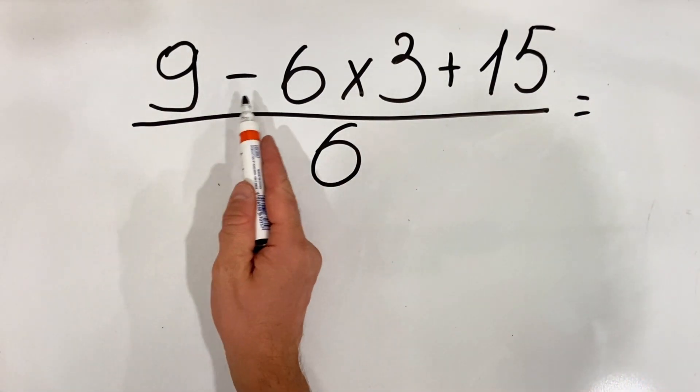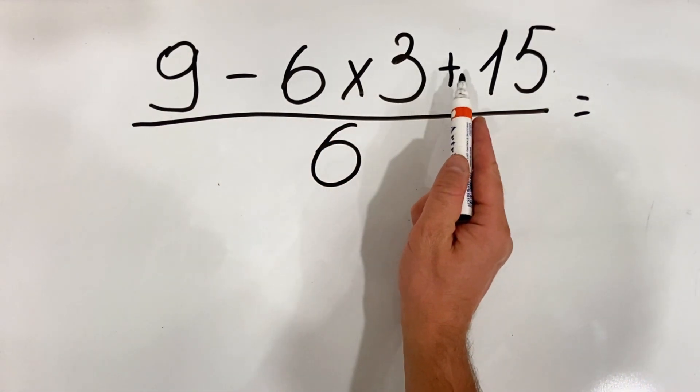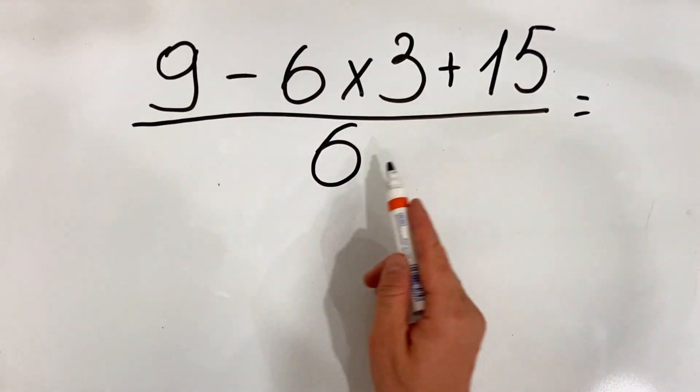Today we have the following equation: 9 minus 6 multiplied by 3 plus 15, over 6.